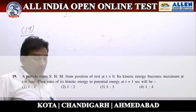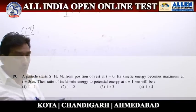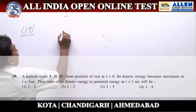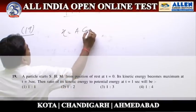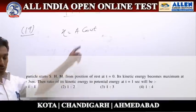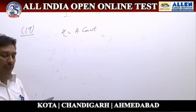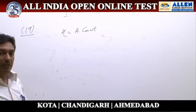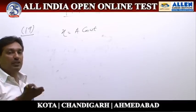Question number 19: a particle starts SHM from a position of rest at t = 0. For the given SHM we can write x = a cos(ωt). Its kinetic energy becomes maximum at t = 3 seconds, which means the particle has travelled from the extreme position to the mean position in 3 seconds.